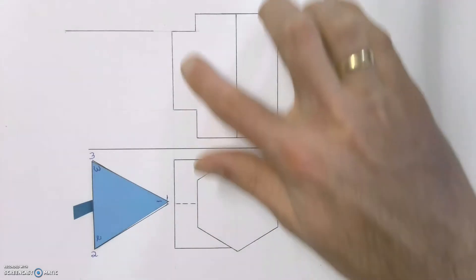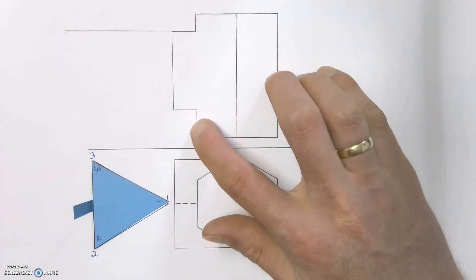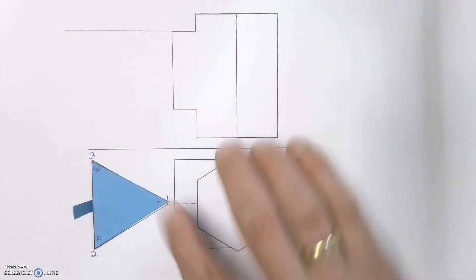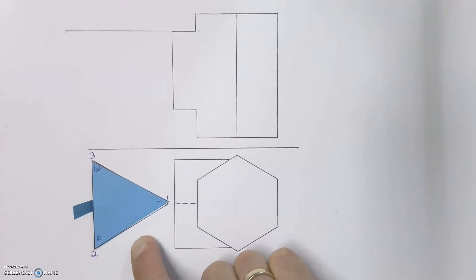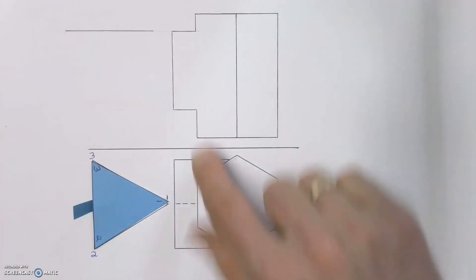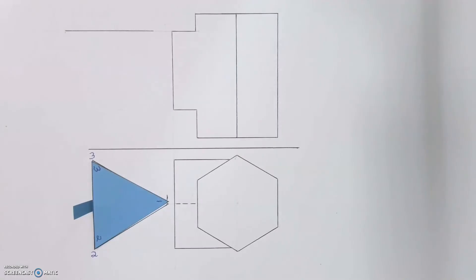I've already drawn in where the shape would go in the front view, but first we're going to have a look at how to get the auxiliary view from our top view into our front view with the correct numbering, because without the correct numbering the rest of the method doesn't work.